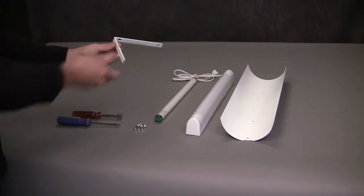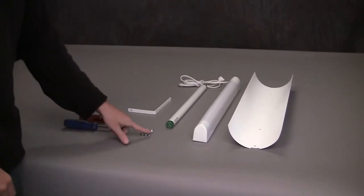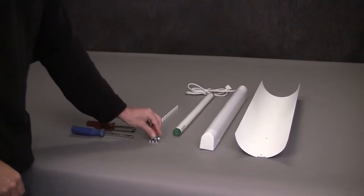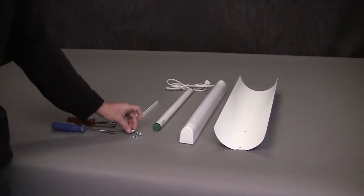This is the L bracket that's used to stand it up and give it stability. It also comes with three hex nuts and three screws. Two of them are half inch screws and one of them is a three quarter inch screw.